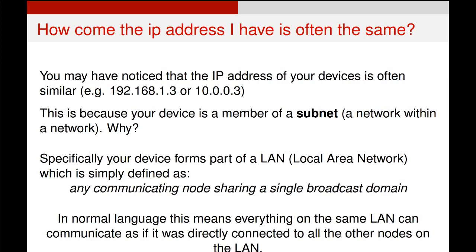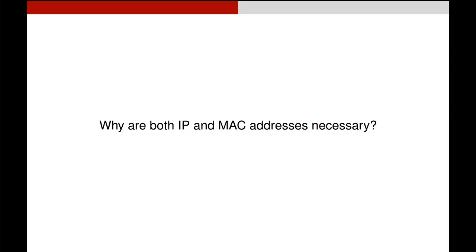Two very common examples of subnets are 192.168.1.3 or 10.0.0.3. These are very common subnets, and essentially many computers on these subnets will automatically be able to communicate with each other because they are part of the same LAN.